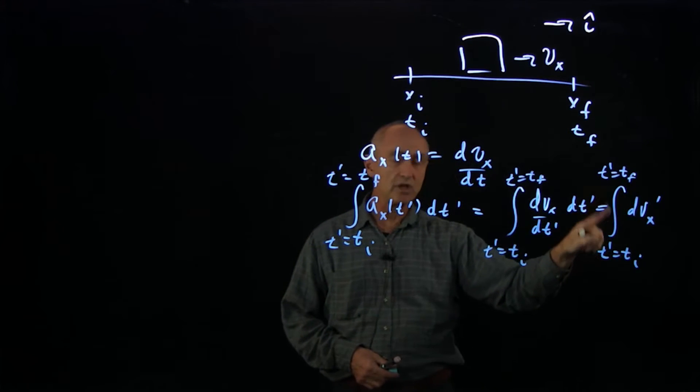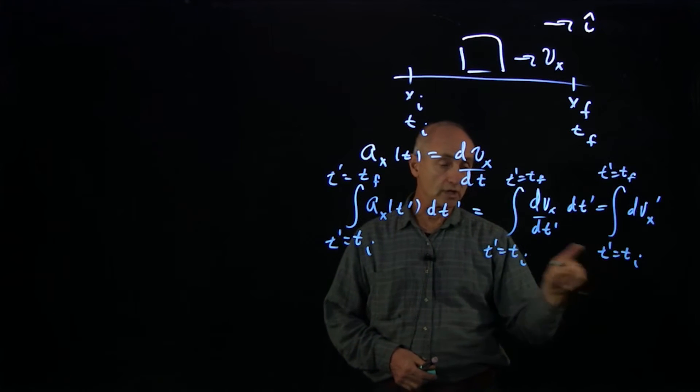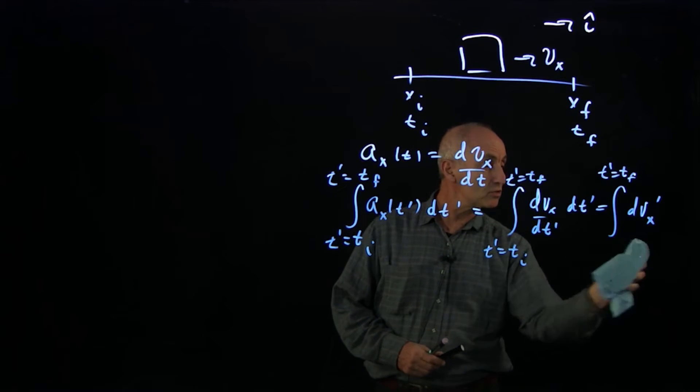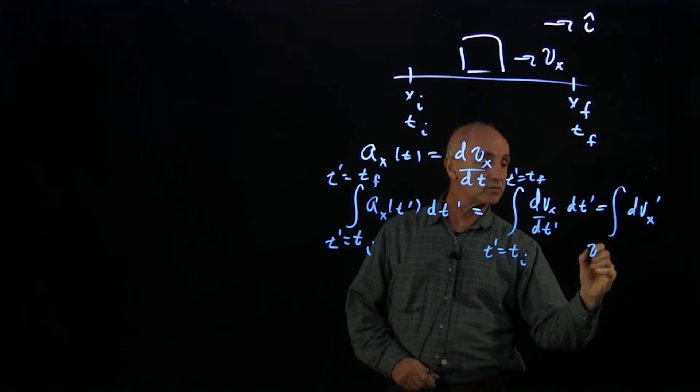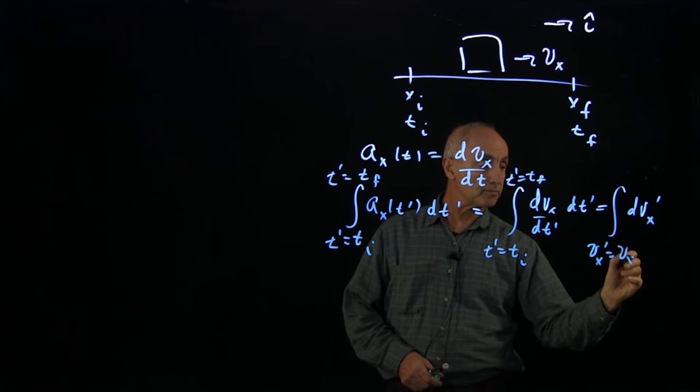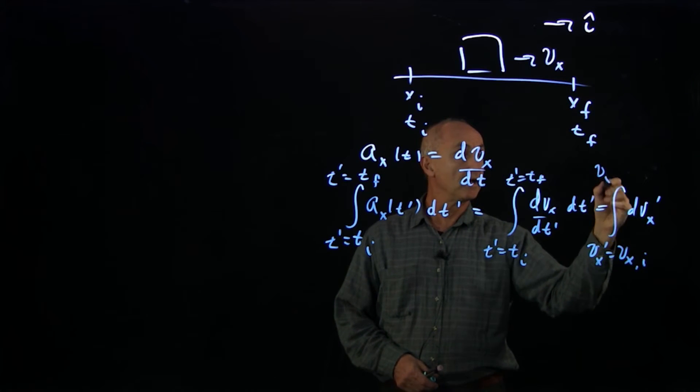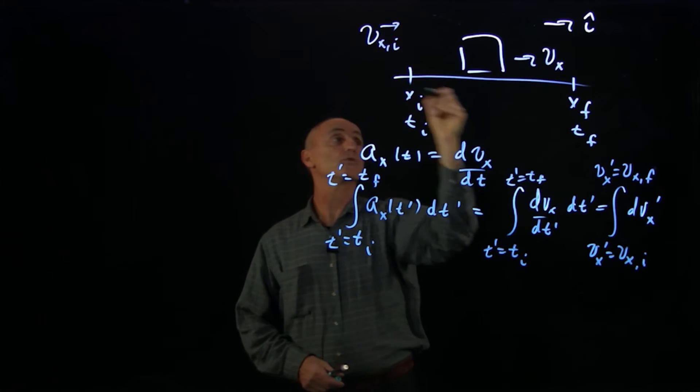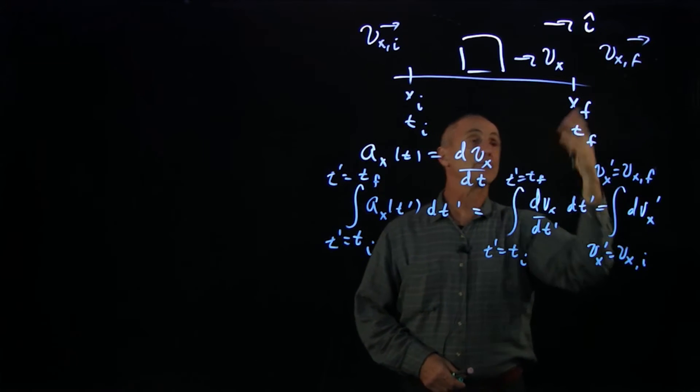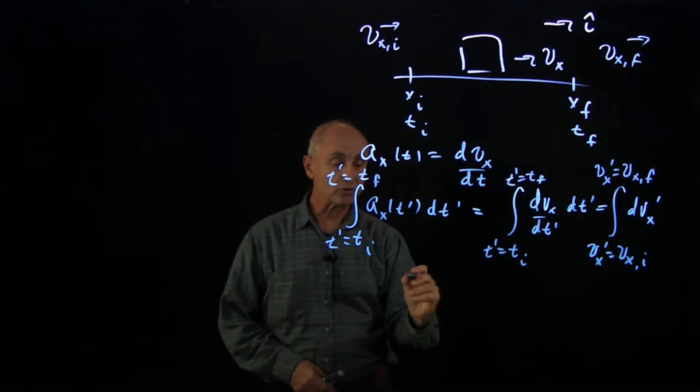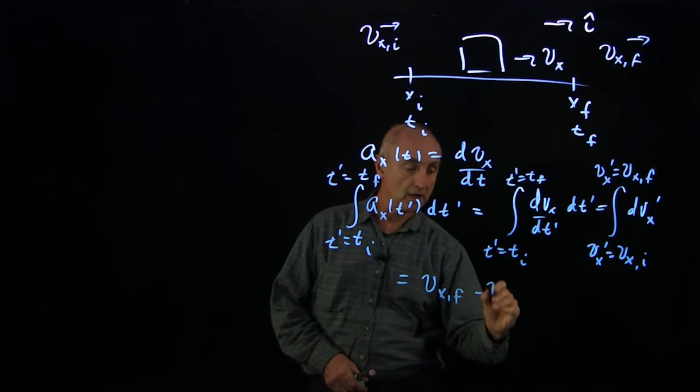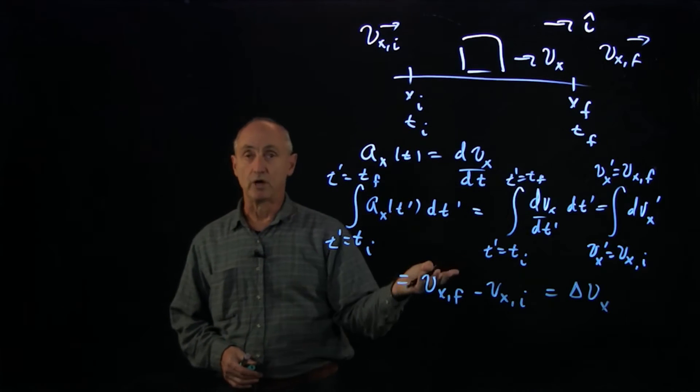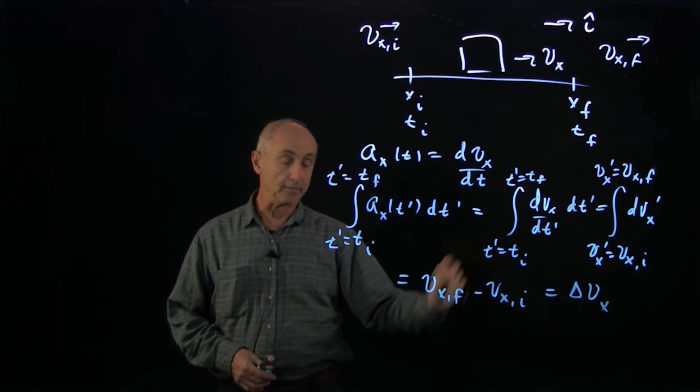Now, notice we've done a change of variables in the integration. So instead of now talking about the endpoints of the integral from t prime t_initial to t_final, now what we're doing is we've changed our integration variable. And so what we have is the velocity integration variable is going from some initial value, and that integration variable is going to some final value. So again, our initial conditions may have some initial velocity, and some final velocity, three different ways of describing the initial and final states. This integral is a very straightforward integral, vx_final minus vx_initial, which is the change in the x component of the velocity. And that's our classic result that the integration of acceleration with respect to time is a change in velocity.